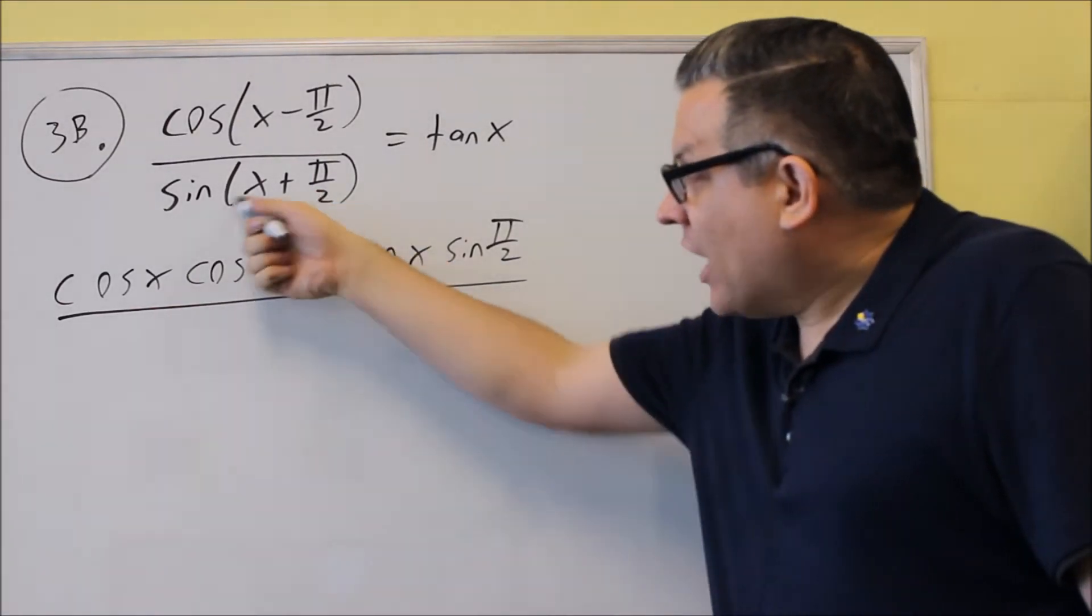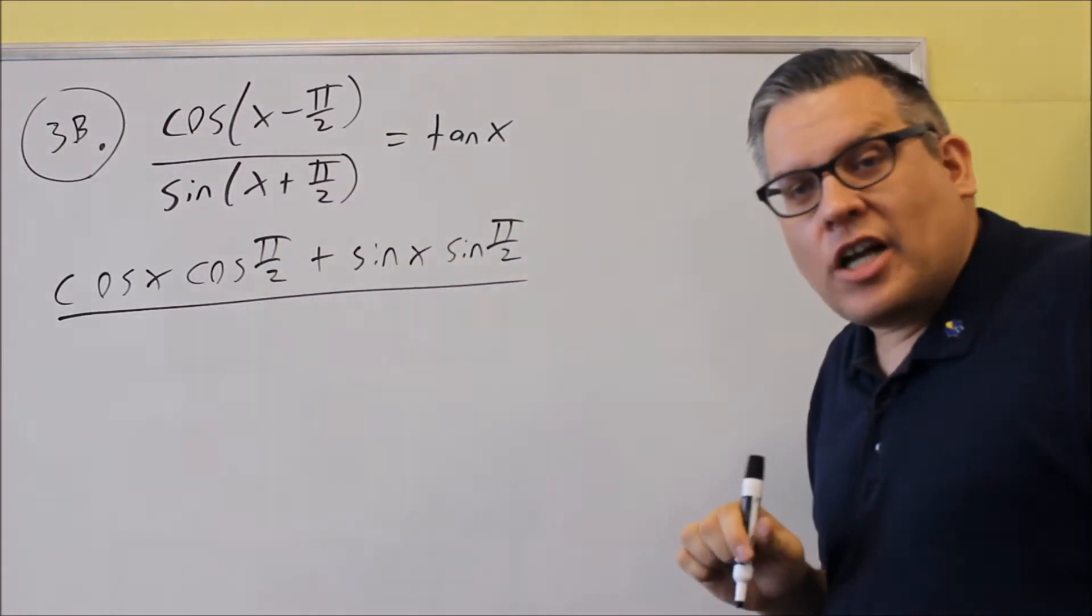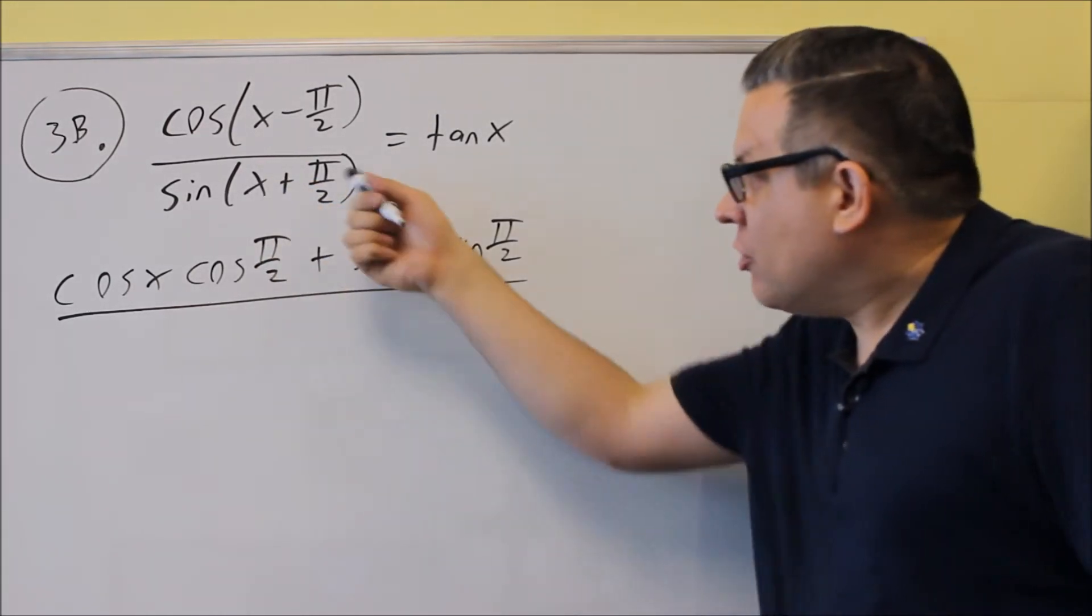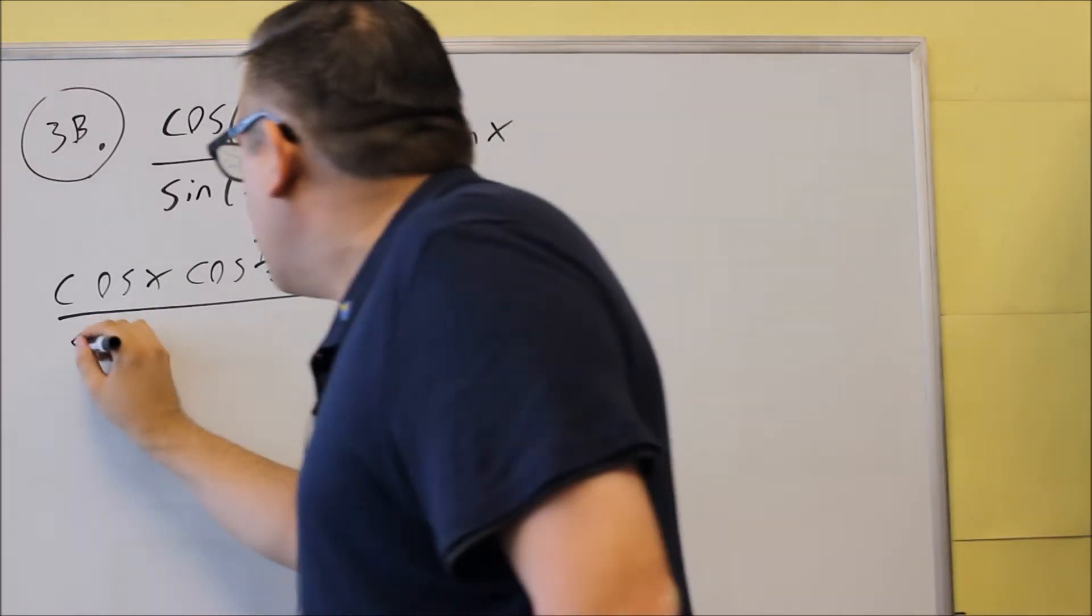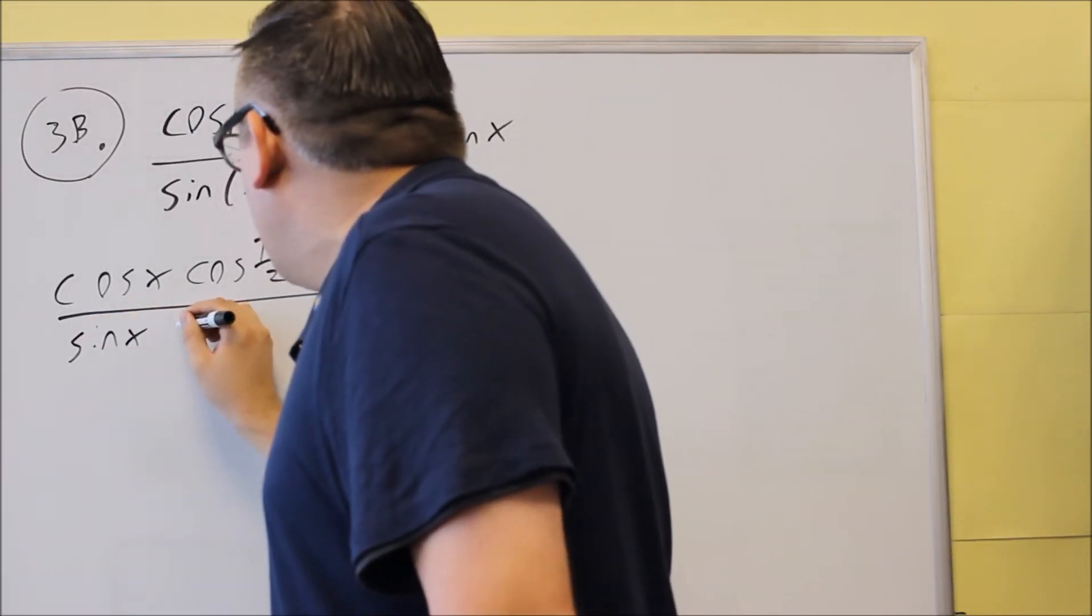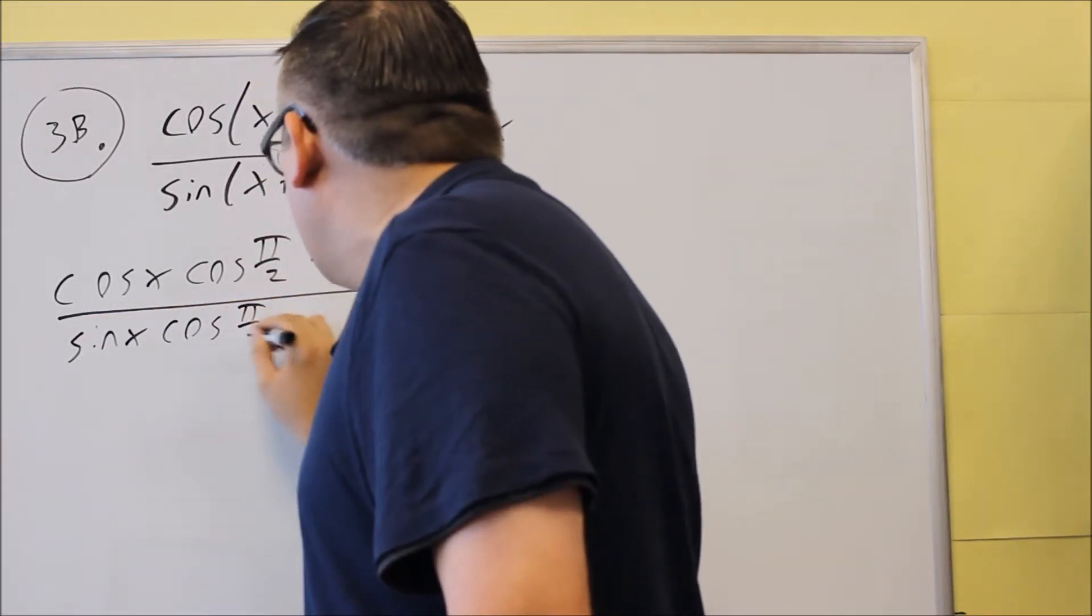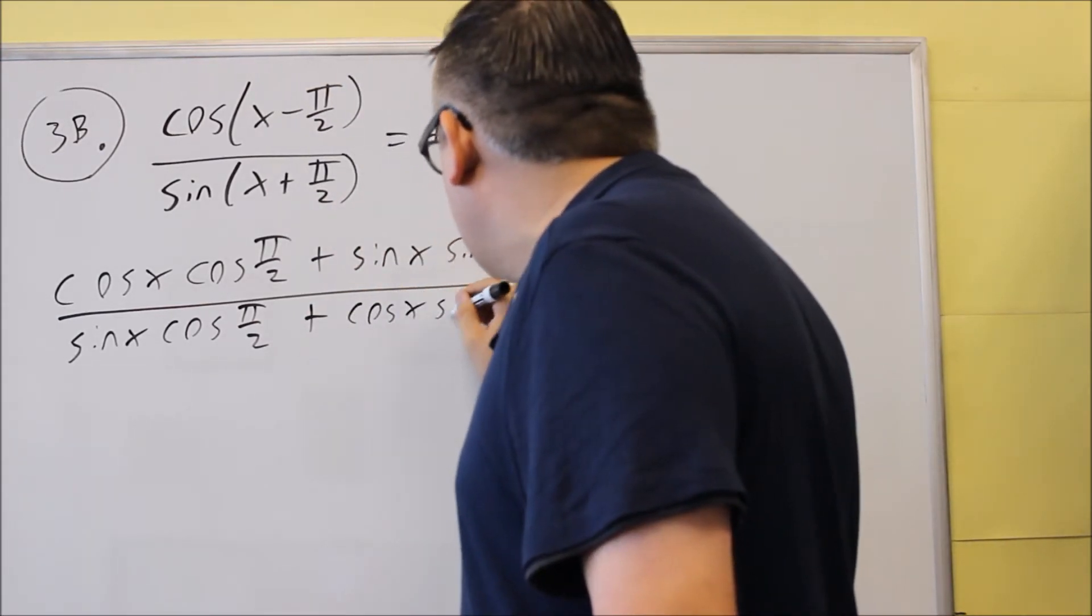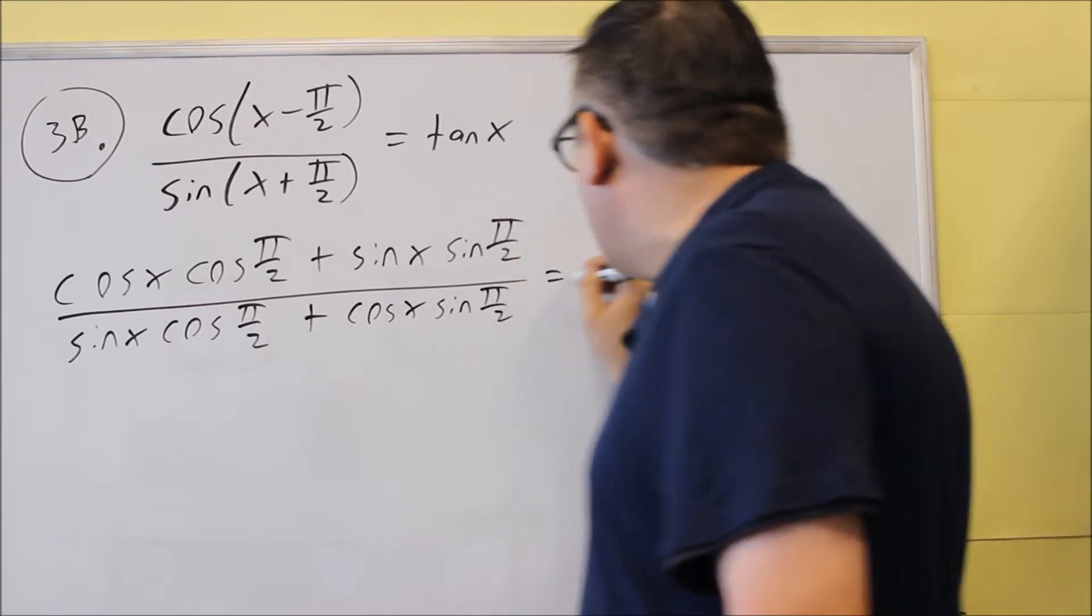For the bottom, we have a sum formula for sine, which is sine cosine plus cosine sine. For this one, we're going to do sine x cosine pi over 2, plus cosine x sine pi over 2.